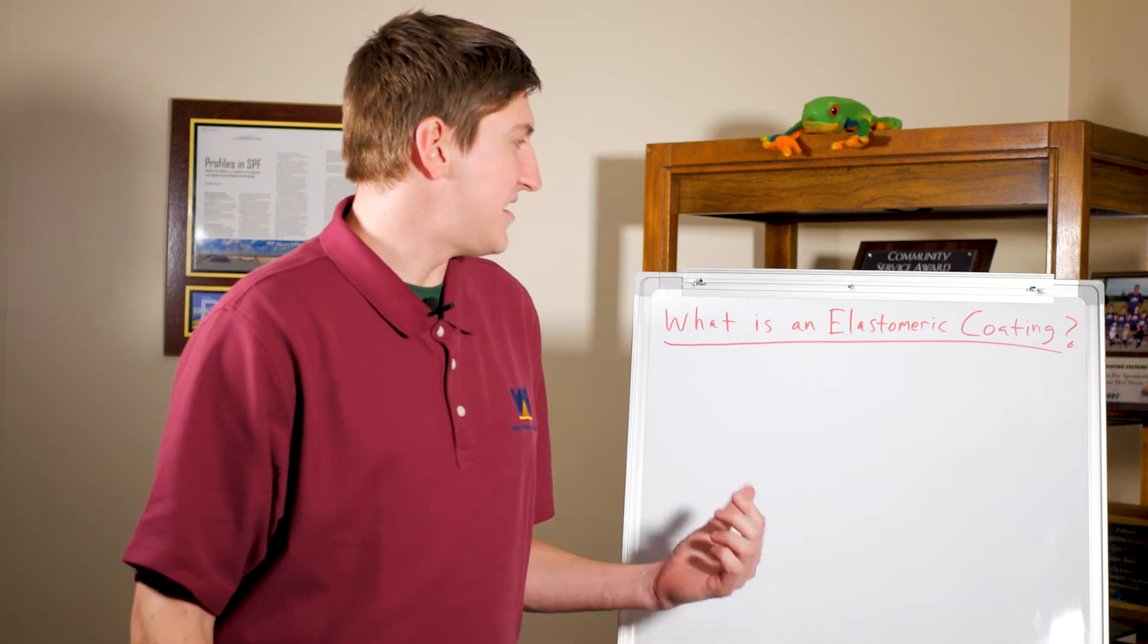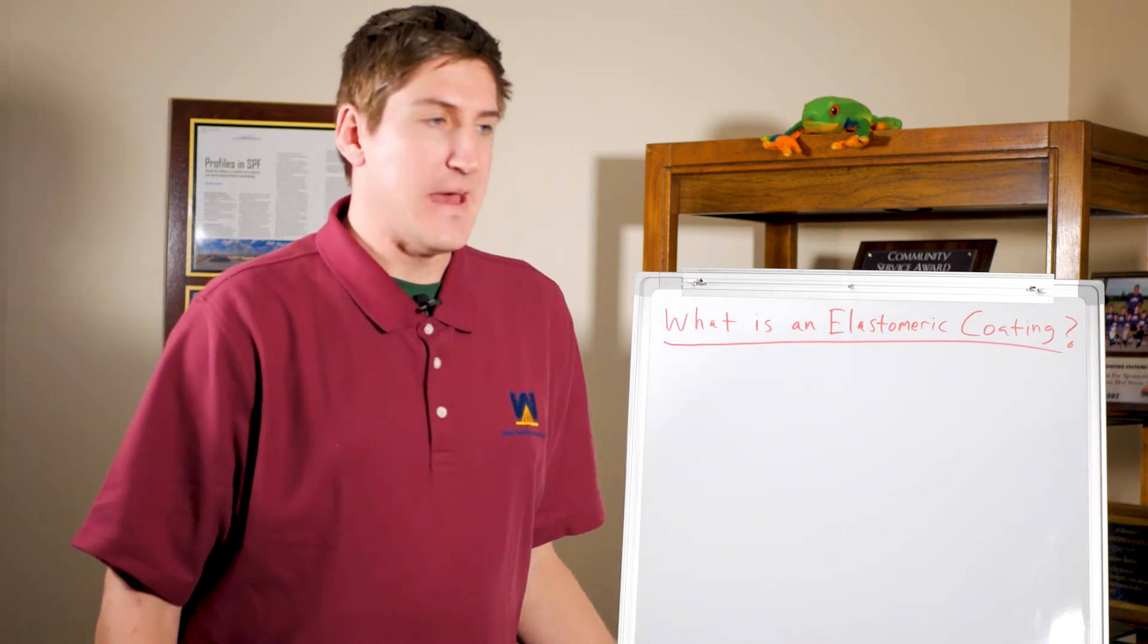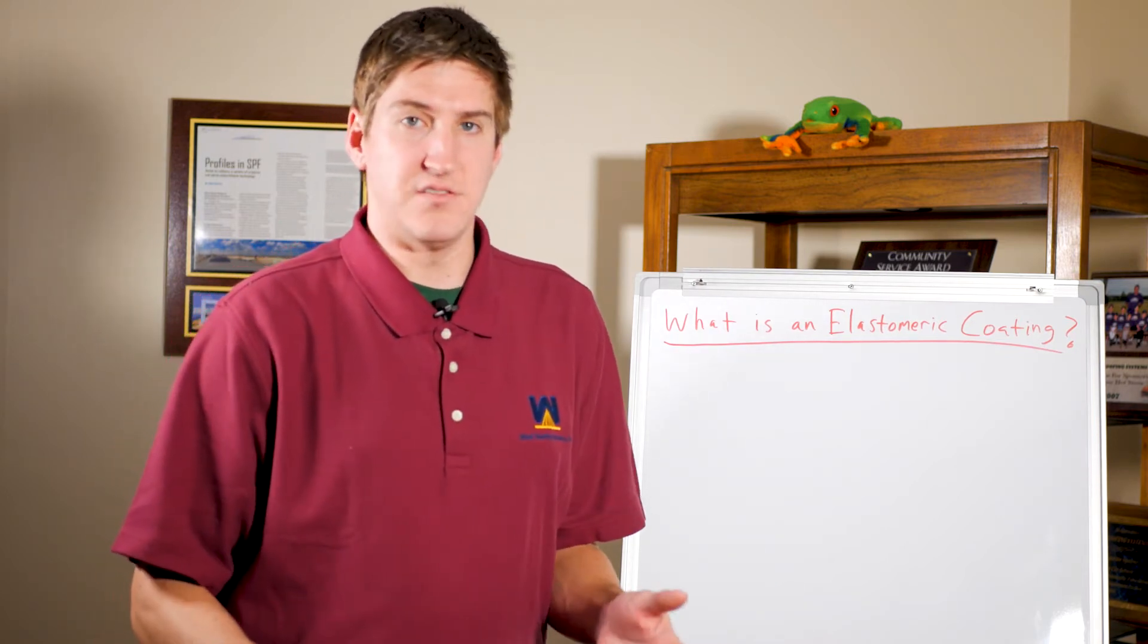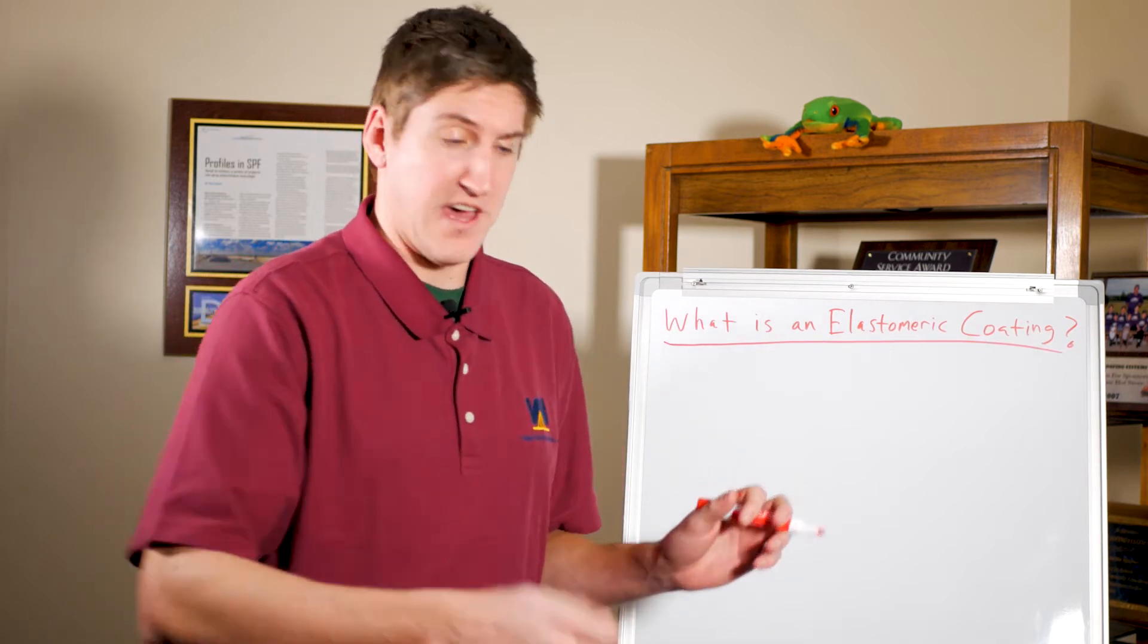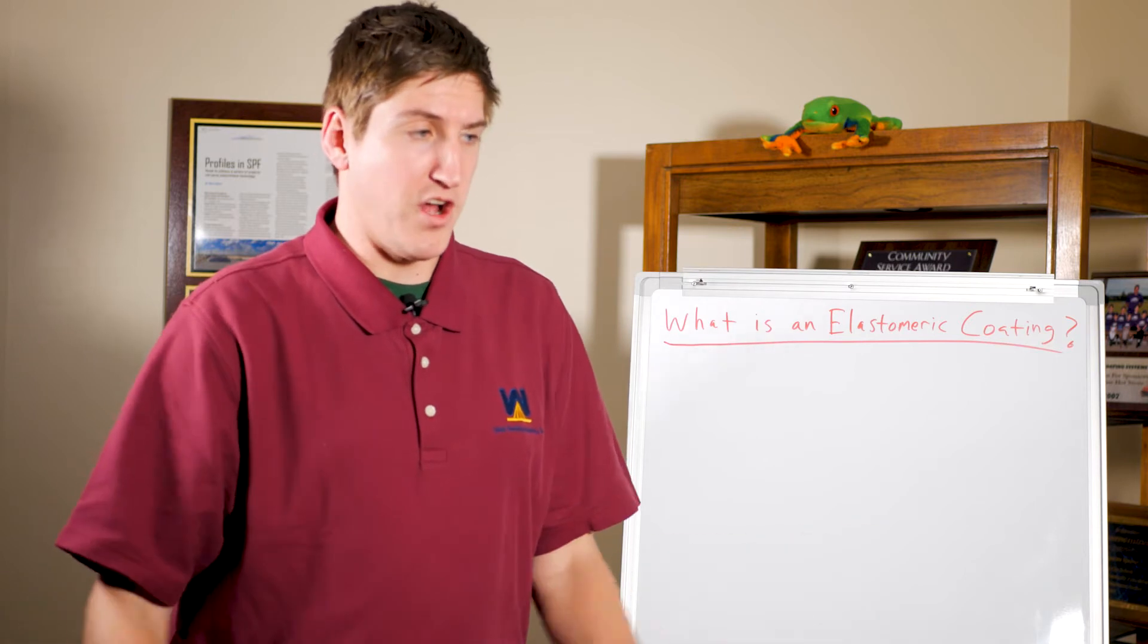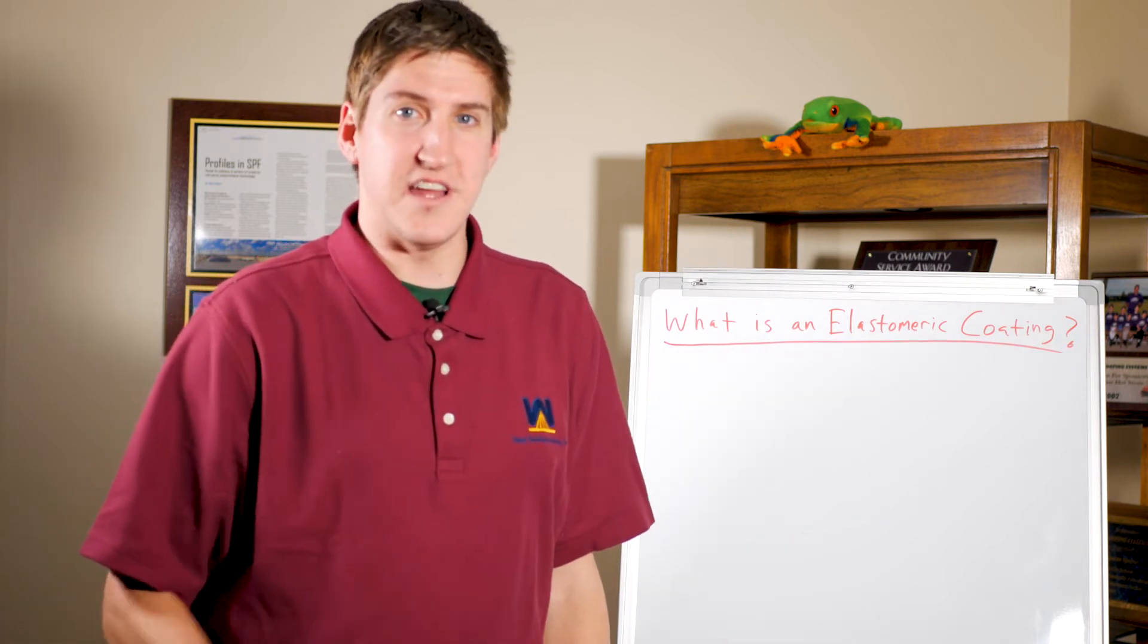Today I want to talk about what is an elastomeric coating. It's sort of like a paint. Now it's not paint, but visualize just taking a bucket of paint and putting it on your roof and slathering it all around, covering it all, making it one layer. That's kind of what it is.